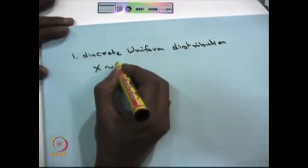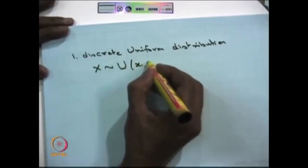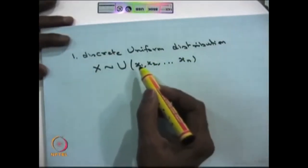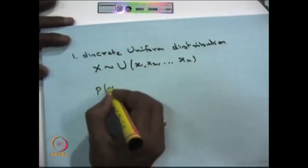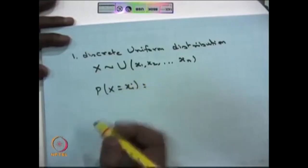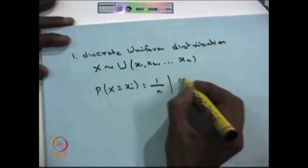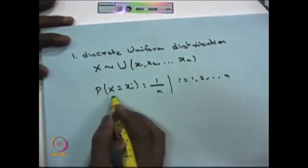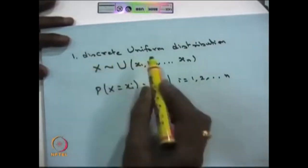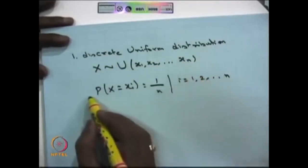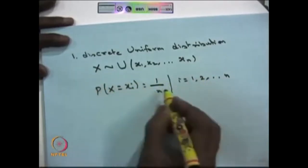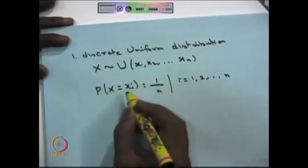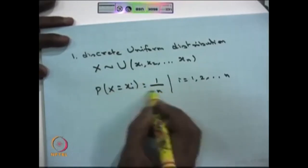Suppose the random variable X is discrete uniformly distributed with the discrete points X1 to Xn. That means the random variable takes the possible values X1 to Xn and it has equal masses at the Xi's for i varying from 1 to n, and is 0 otherwise. Then we say the random variable is called a discrete uniform distribution.